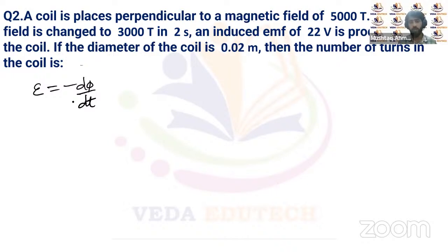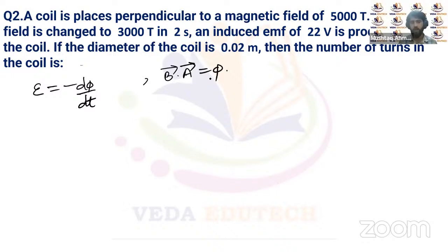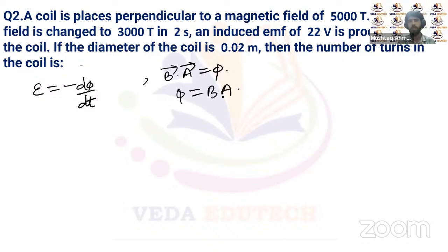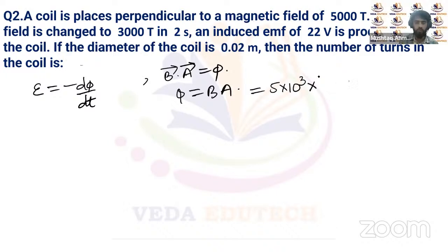The coil is perpendicular to the magnetic field, so the area vector is along the magnetic field direction, meaning Φ = B × A. The area is πd²/4. Initially, Φ₁ = 5 × 10³ × π/4 × (0.02)² = 5 × 10³ × (2 × 10⁻⁴) × π/2, which gives 0.5π/2.